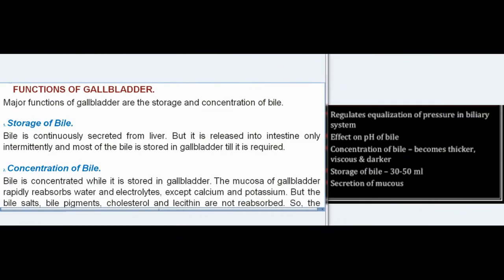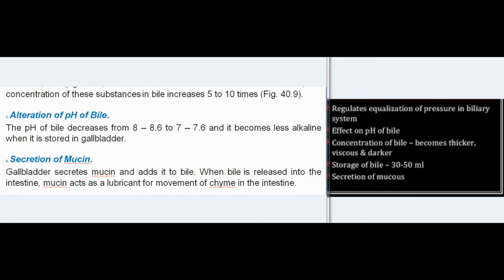Major functions of the gallbladder are storage and concentration of bile. Bile is continuously secreted from the liver but released into the intestine only intermittently; most bile is stored in the gallbladder until required. During concentration, the mucosa of the gallbladder rapidly reabsorbs water and electrolytes (except calcium and potassium), but bile salts, bile pigments, cholesterol, and lecithin are not reabsorbed. So the concentration of these substances increases 5 to 10 times.